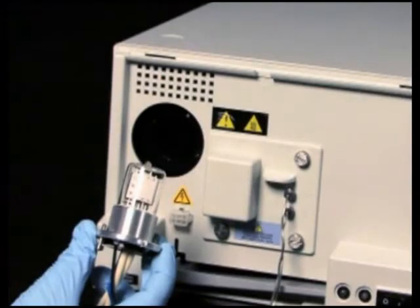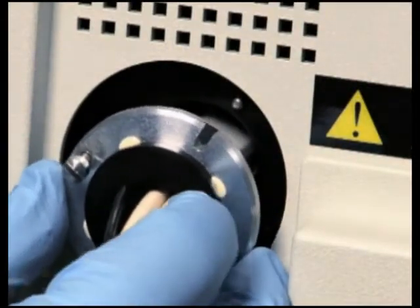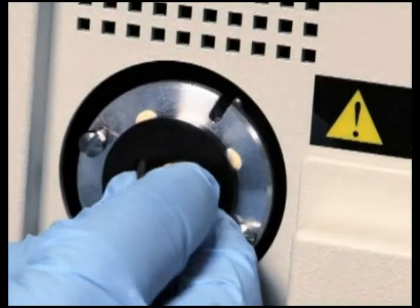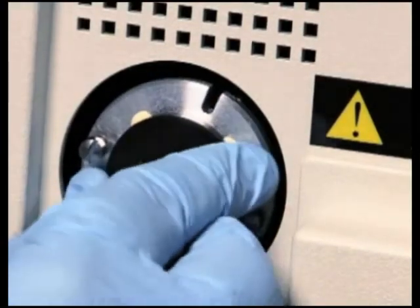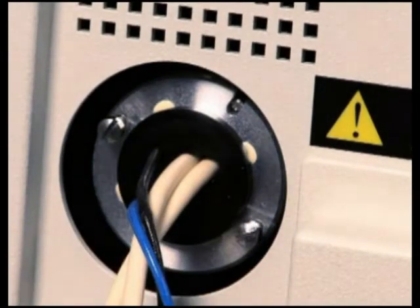Hold the replacement lamp by the base only, being careful not to touch the lamp glass. Position the lamp so that the cutout on the lamp base is at the 1 o'clock position and in line with the alignment pin on the lamp housing. Then, gently push the lamp forward until it bottoms into position.